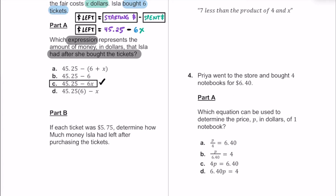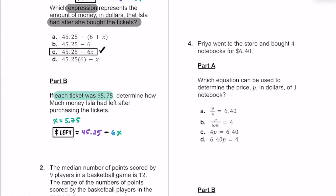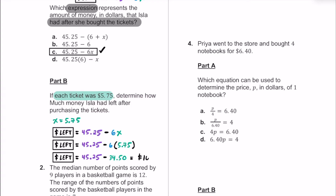For part B, we're told each ticket costs $5.75, so X equals $5.75. We substitute that value into our expression: $45.25 minus 6 times $5.75. Using a calculator, six times 5.75 equals $34.50. After spending all that money, Isla will have $10.75 left — that's how much money she has after buying those six tickets.